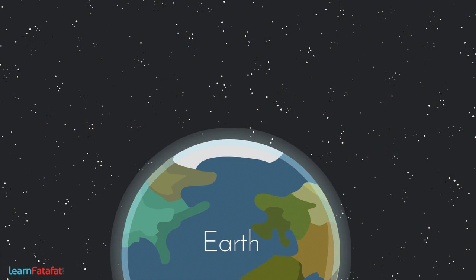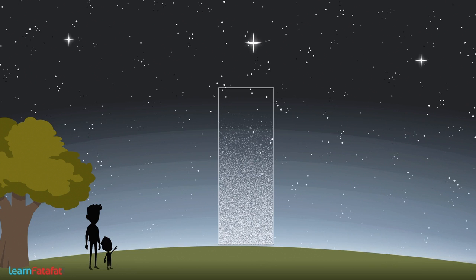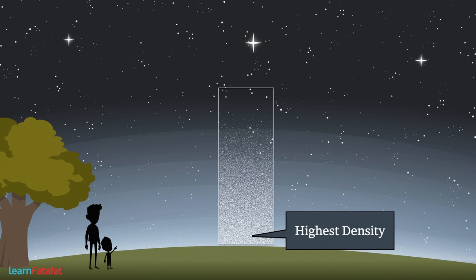We live on planet Earth. The atmosphere of Earth consists of layers of air. The particles of air are closely spaced at the surface of the Earth than those at higher layers. That means the density of air is highest at the surface while it goes on decreasing towards the top layer.